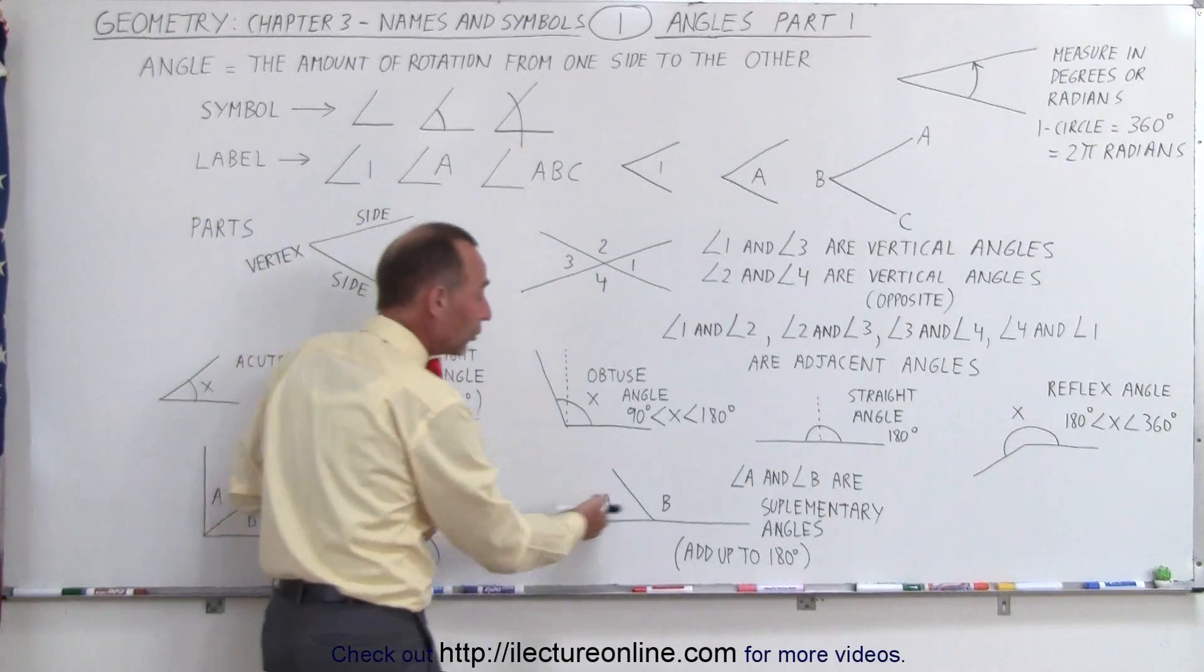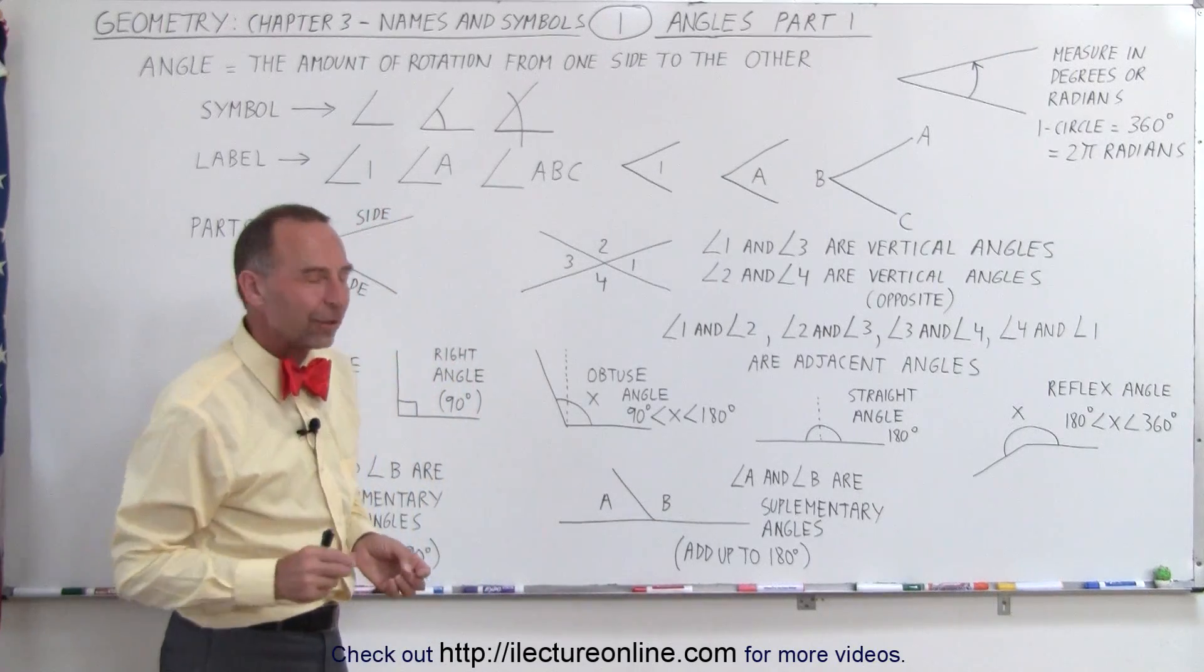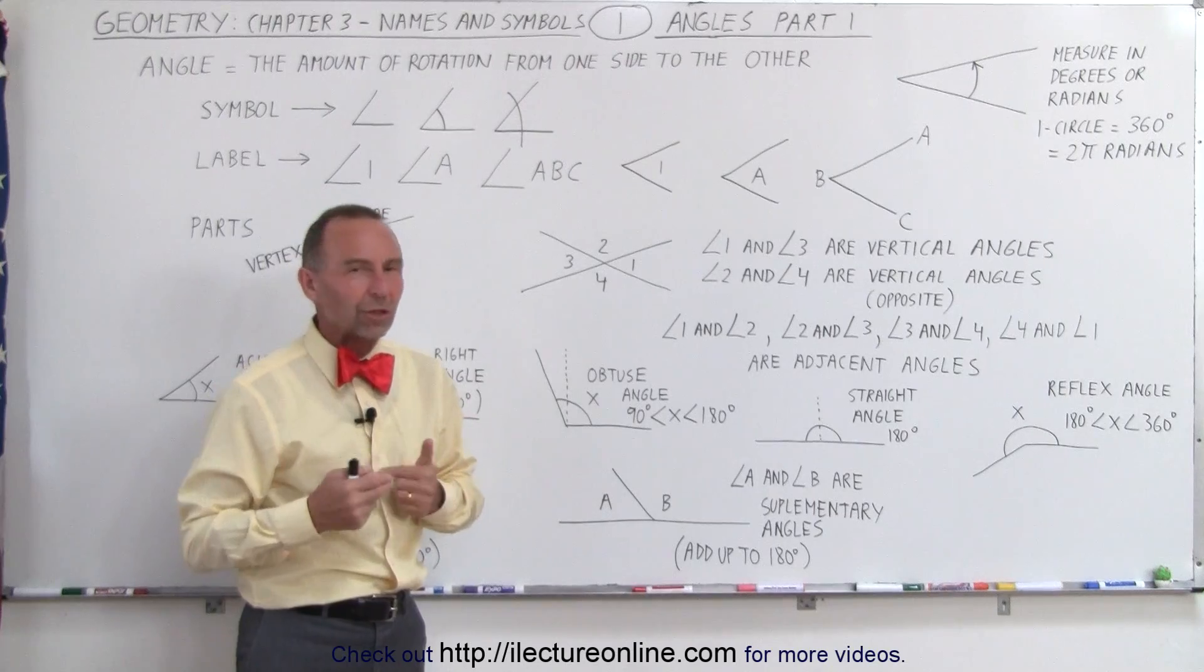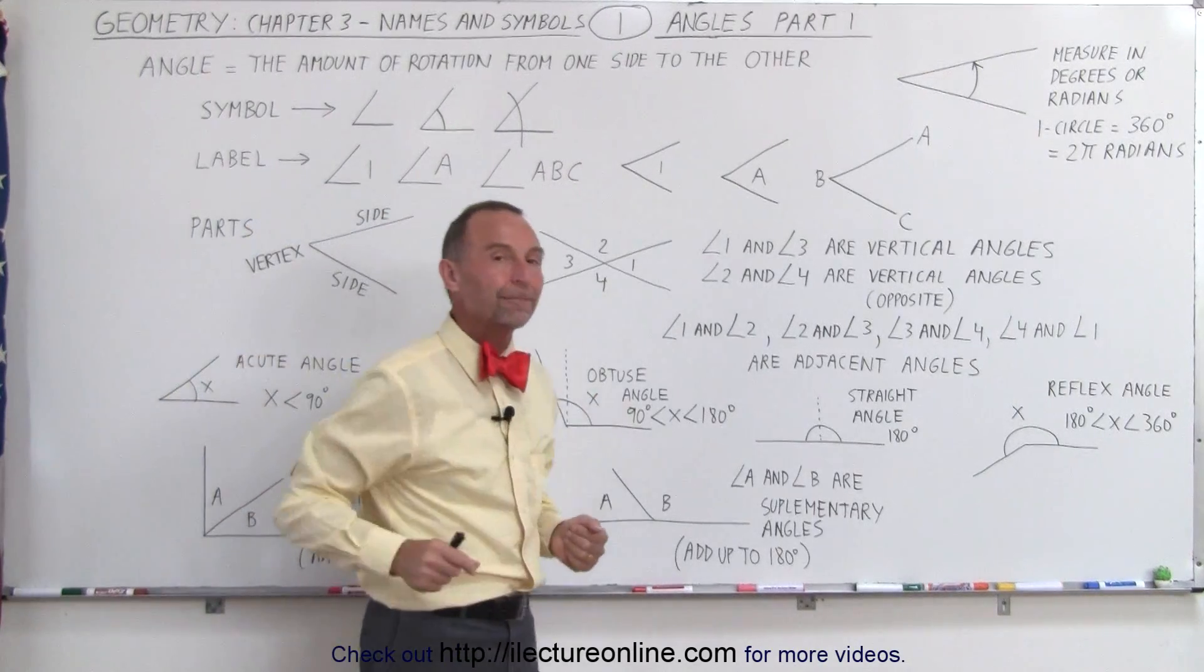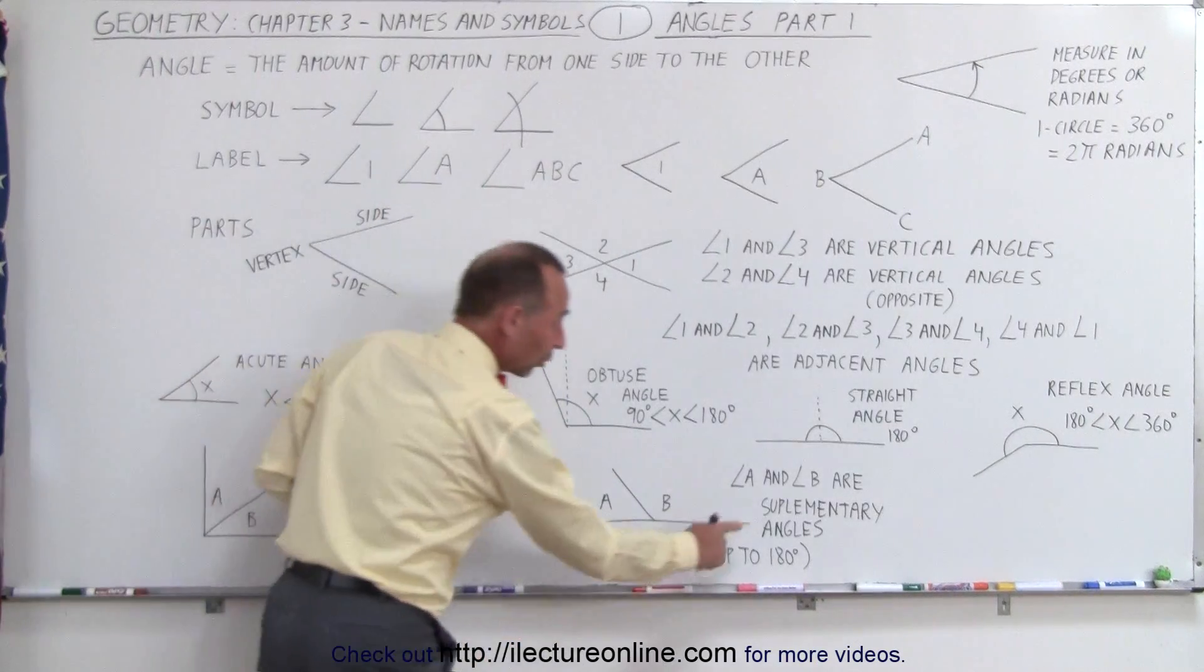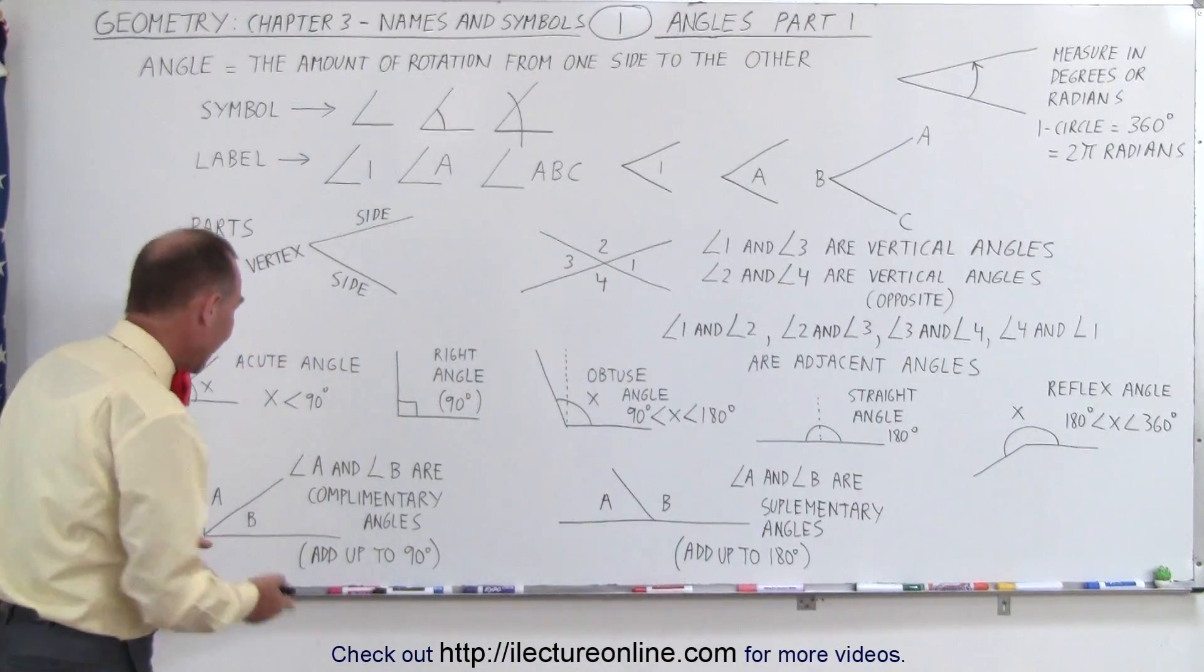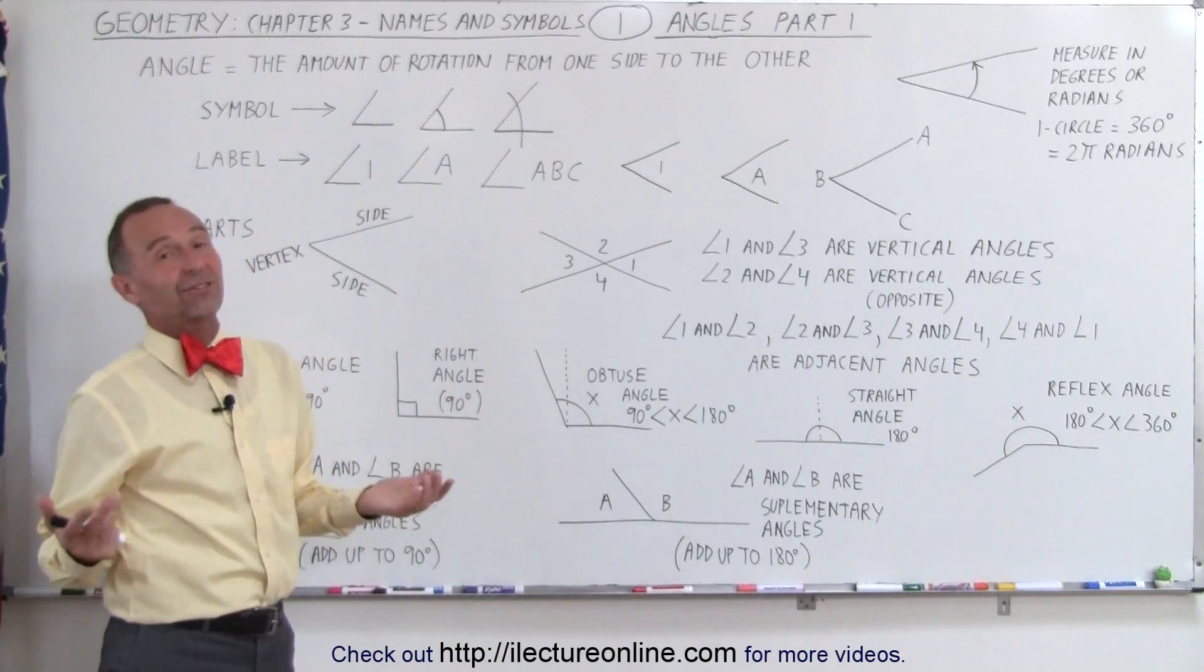And if the two angles add up to 180 degrees, they're called supplementary angles. I always have trouble figuring out which was which, and I would keep forgetting what complementary meant and what supplementary meant. And the way I finally figured it out was that this word starts with the letter C, and this word starts with the letter S, and C comes before S in the alphabet, and 90 degrees is smaller than 180 degrees.